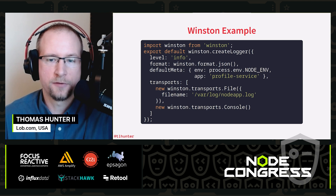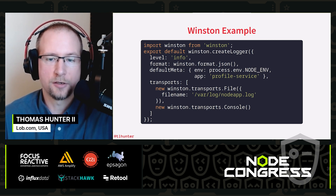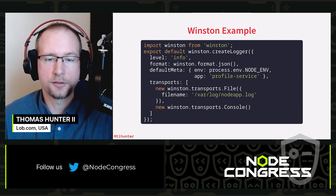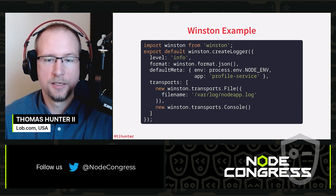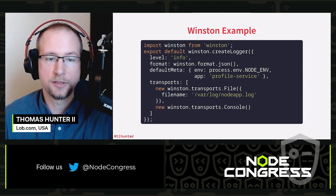The transports configuration defines two different outputs for these logs. The first says logs are written to disk at /var/log/nodeapp.log, and the second says they're printed to the console.